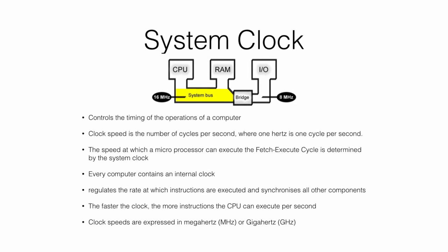The clock speed, or clock rate, is the speed at which a microprocessor can execute the machine cycle. Every computer contains an internal clock that regulates the rate at which instructions are executed and synchronised with all the various computer components. The CPU requires a fixed number of clock ticks or clock cycles to execute each instruction. The faster the clock, the more instructions the CPU can execute per second.